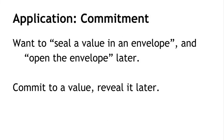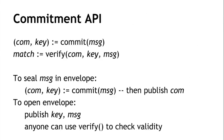The commitment API looks like this. There are two things you can do. First, you can commit to a message, and that's going to return two values: a commitment and a key. Think of the commitment as the envelope on the table and the key as a secret key for unlocking it. Then later, you allow someone else to verify — given a commitment, a key, and the message, they can verify that the commitment, key, and message really go together, and this returns true or false. To seal a message in an envelope, we commit to it, which returns a commitment and a key, and then we publish the commitment. Later, to open the envelope, we publish the key and the message, and then anybody can use the verify call to check the validity.